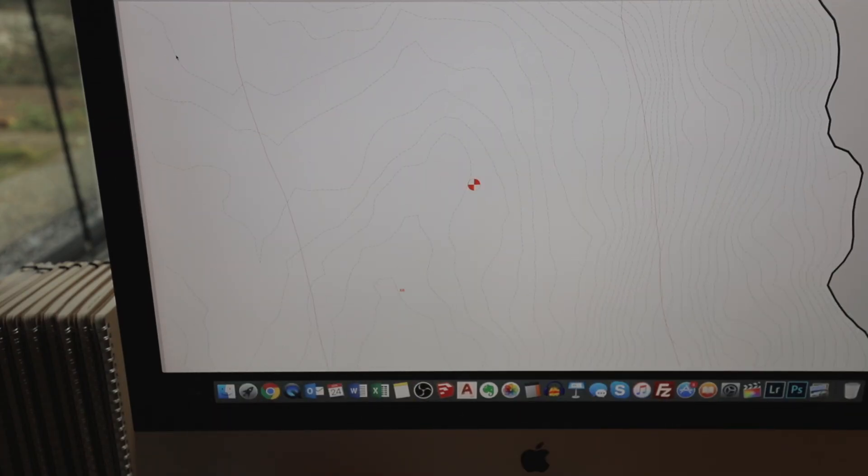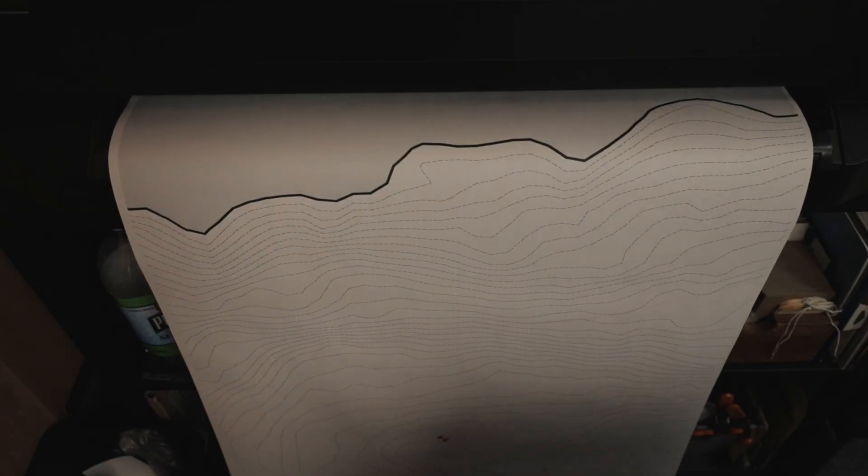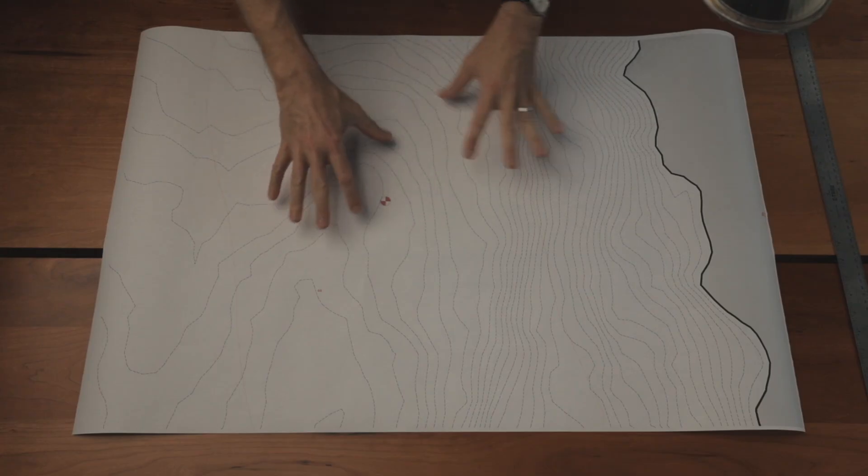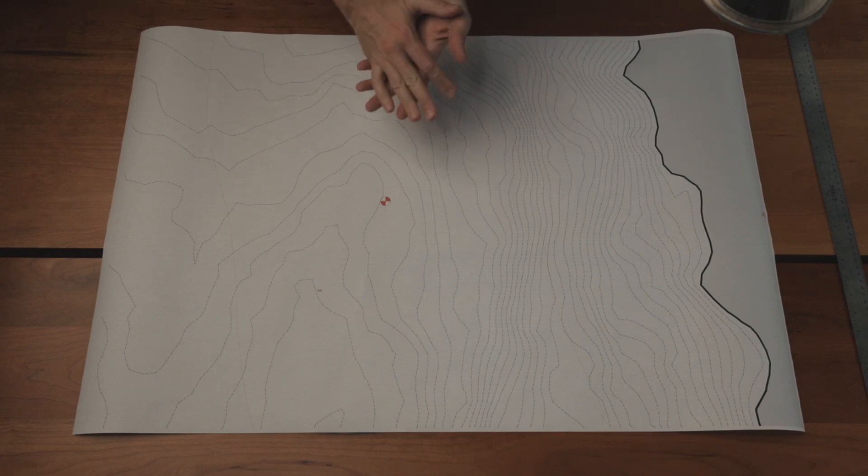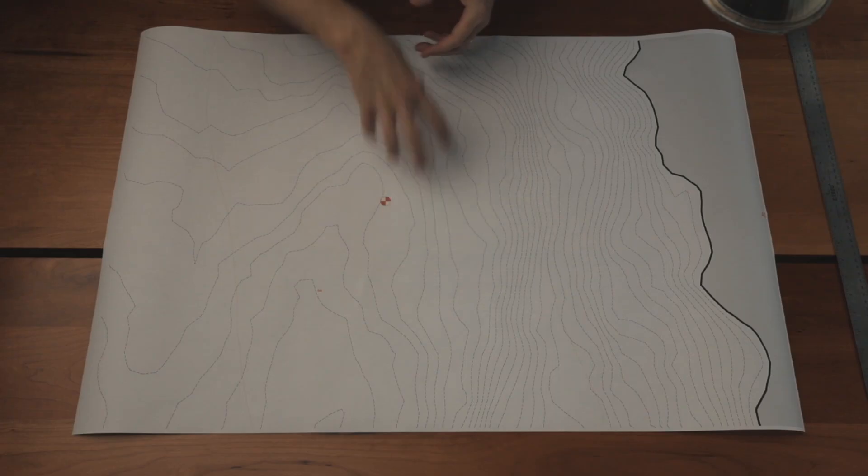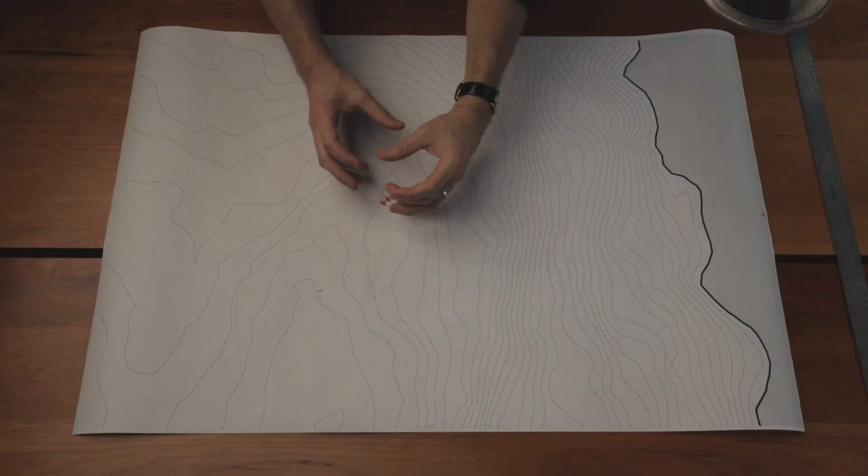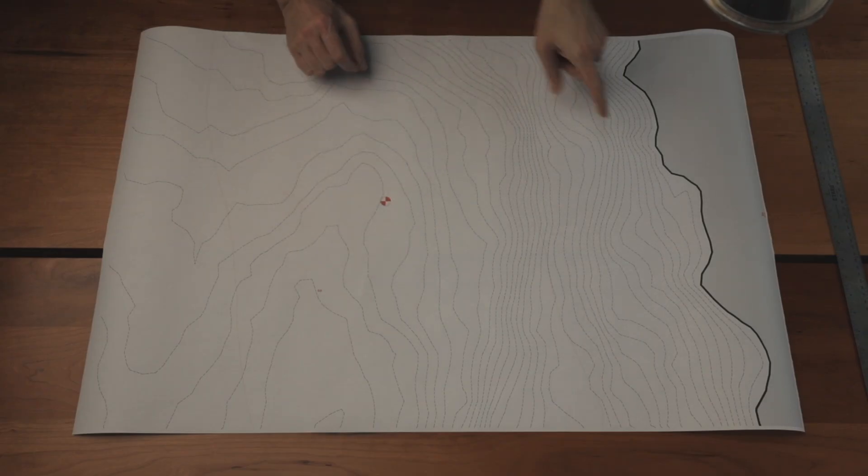Knowing in general where you want to build on the site is helpful in determining how large you're going to make this base. A couple of factors come into play here. Number one is how much context do you want surrounding the site. I know in general the size of the house - when we build a model at this scale it's going to be about this large.